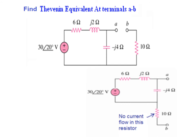To find V_thevenin, if we move this branch down it will be as shown here. You can see from this diagram that this 10-ohm resistance is isolated — there is no power supply and no current passing through it from this circuit. That means the voltage drop across it is zero, so V_AB is actually whatever the voltage drop is across the capacitor. Let's find out the voltage drop across the capacitor.